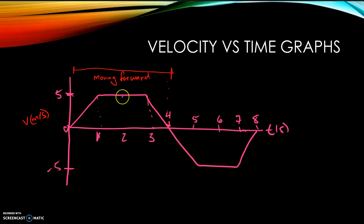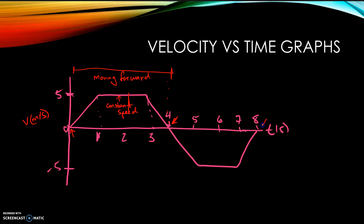Even though this part is flat, all that says is it's moving at a constant speed — it is not stopped. On a position versus time graph a flat line meant the object was stopped, but on a velocity versus time graph a flat line indicates constant velocity. The only place where the object is stopped is where the velocity equals zero — right where it crosses the x-axis.